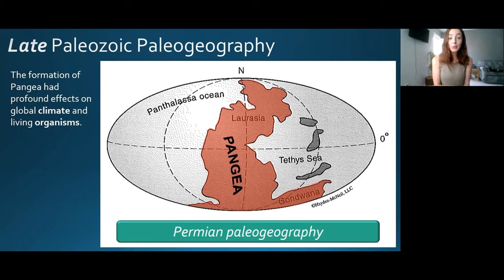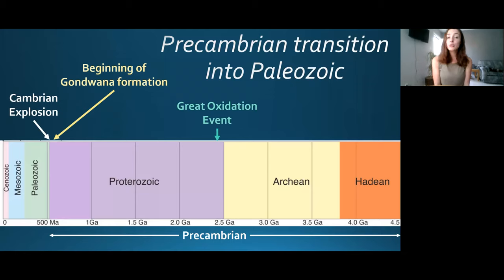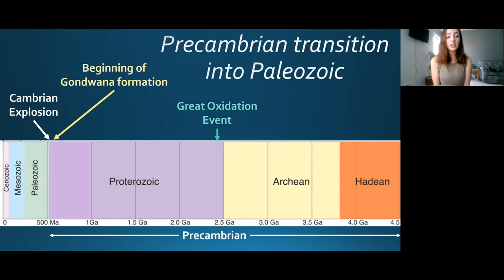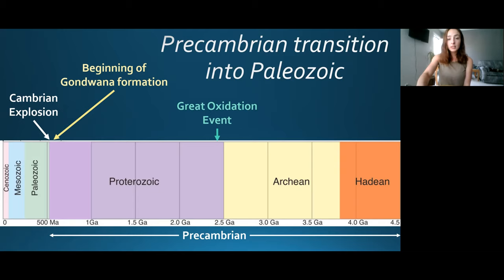The formation of Pangea had profound effects on global climate and living organisms, which we'll discuss when we get to the mass extinction. Now for a quick review of the geologic events of the Paleozoic: we started with the beginning of Gondwana formation, the Great Oxidation, and the Cambrian explosion — setting those aside for the life portion.